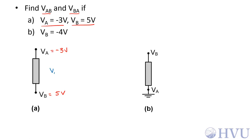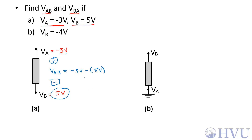The voltage VAB assumes that node A is at the higher voltage relative to node B, so the first subscript indicates the positive terminal of the voltage. To get a voltage difference, I take the voltage at the positive terminal, which in this case is negative 3 volts, and subtract from that the voltage at the assumed negative terminal, which is positive 5 volts. So VAB is negative 3 minus 5, which is negative 8 volts with this assumed polarity.